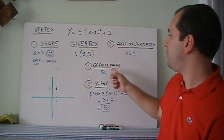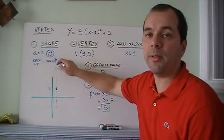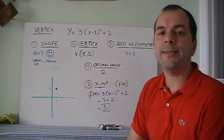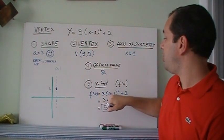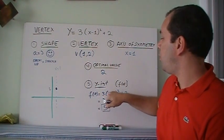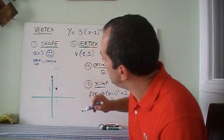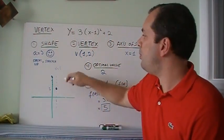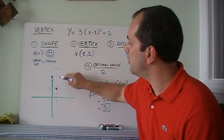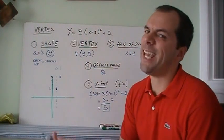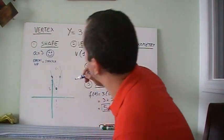The optimal value is 2 — that's as low as it goes since it opens up, making it a minimum. For the y-intercept, plug in x = 0: (0 − 1)² = 1, times 3 is 3, plus 2 gives 5. So the y-intercept is 5. Now with the vertex and y-intercept plotted, and knowing the axis of symmetry is x = 1, there's a mirror point on the other side, allowing us to sketch the parabola.